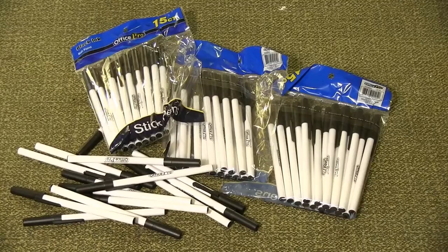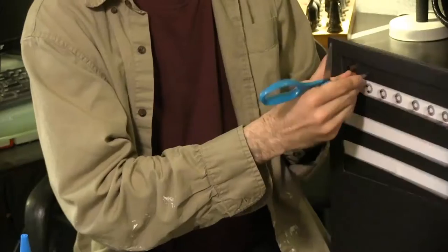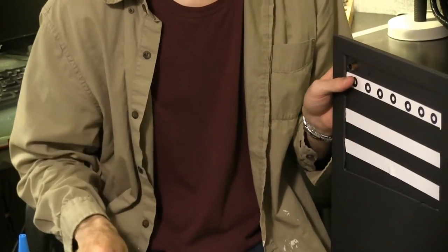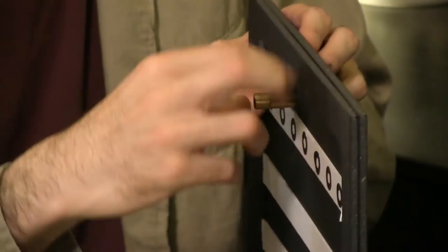Next, I took some pen caps, cut off the clip, and spray painted them gold. After punching some holes in the black stripes, I inserted the pen caps. It gave the board an extra 3D effect and allowed Matt to run cords out of them.